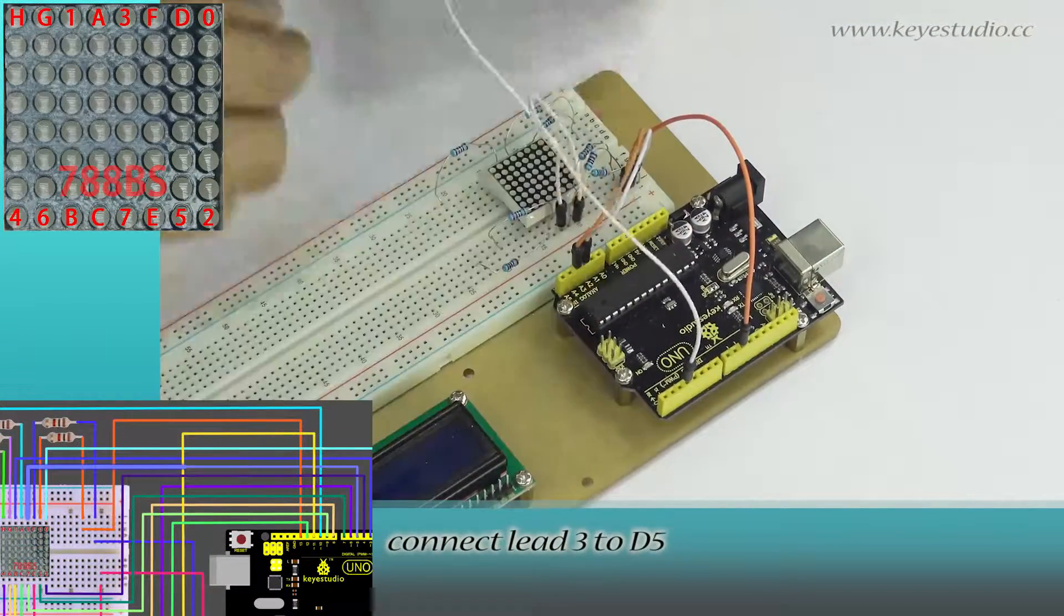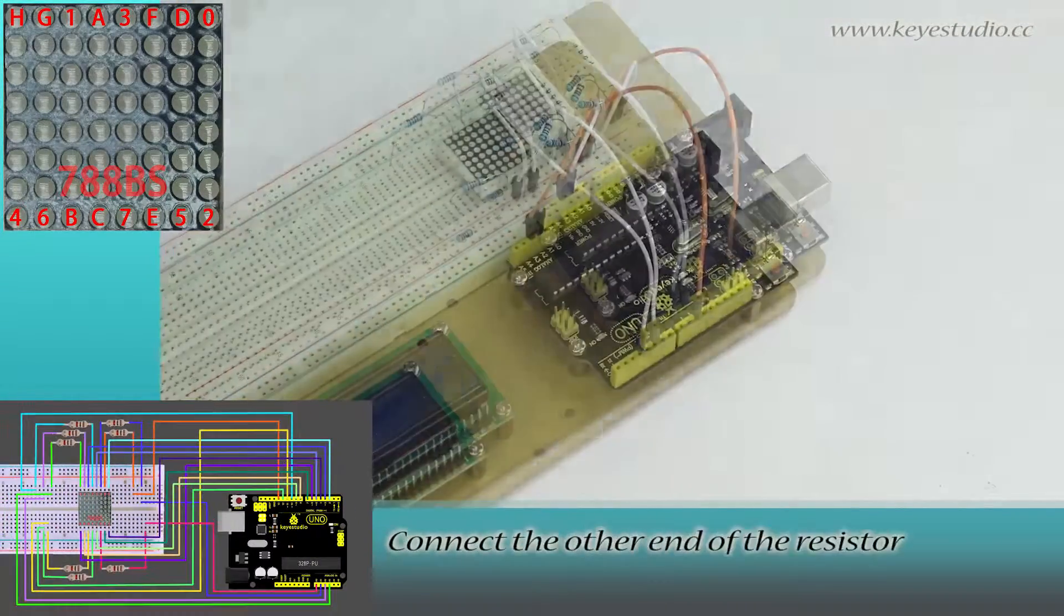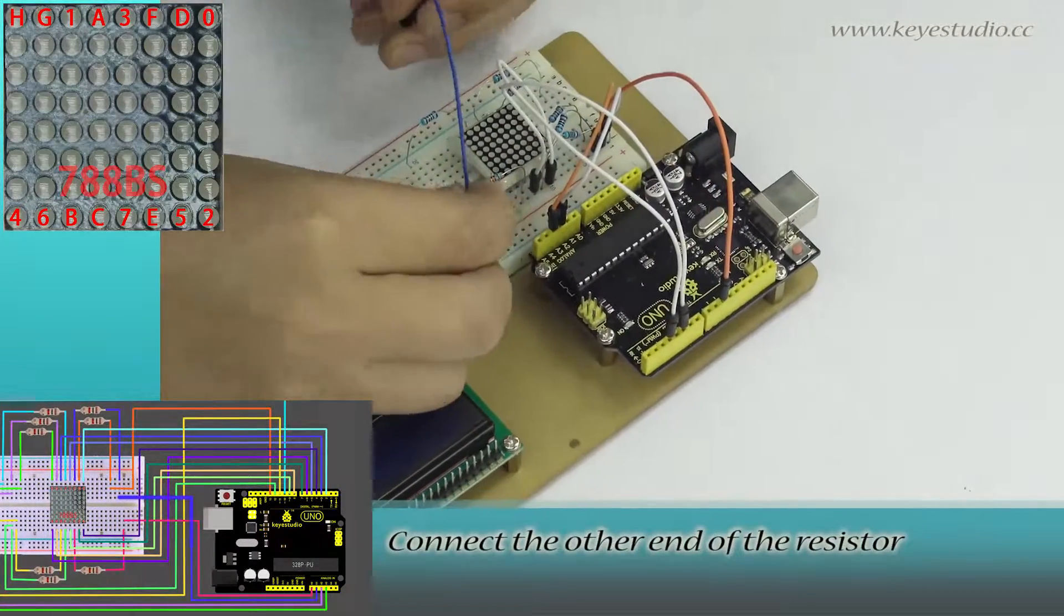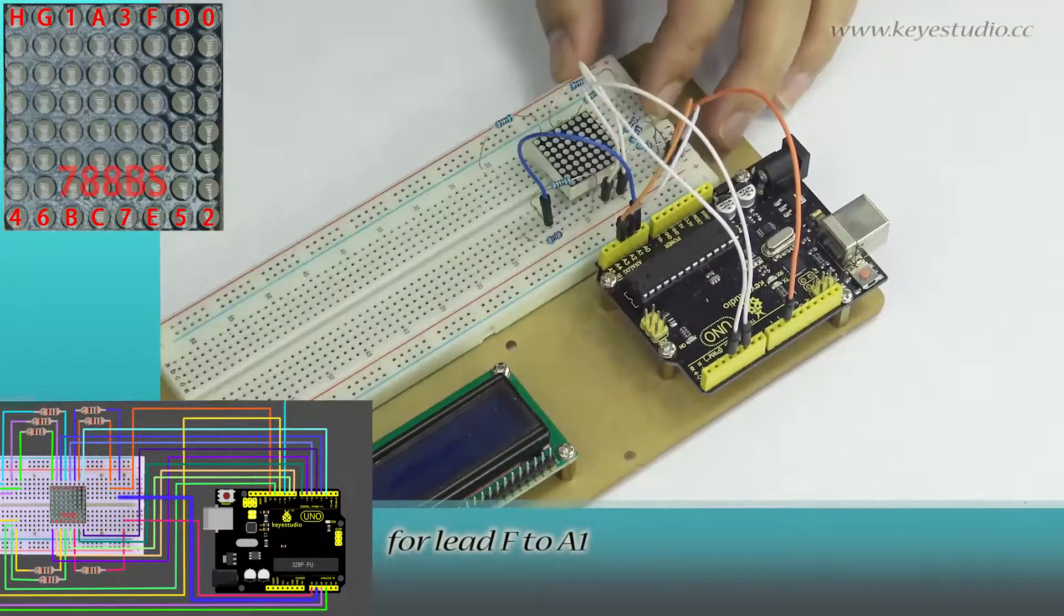Connect the other end of the resistor to lead F to A1. The one for lead C connects to D13.